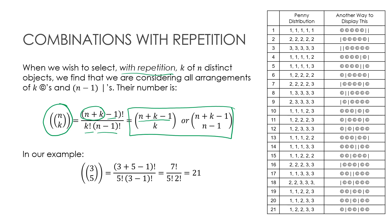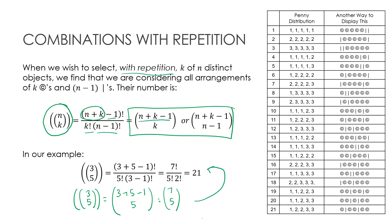So three choose five with repetition: I could write this as a normal binomial coefficient of three plus five minus one over five, which is seven choose five. That tells me I'm going to take seven factorial over five factorial times two factorial. So three choose five in our combinations with repetition is the same as seven choose five, giving us 21.